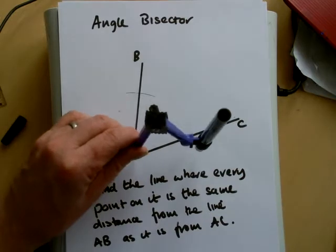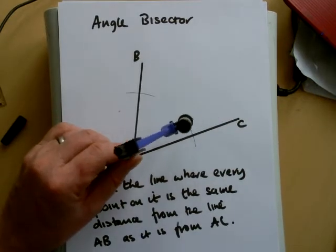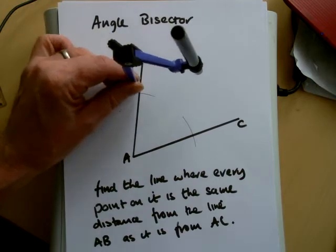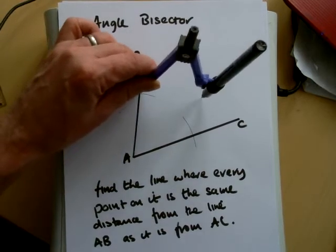And then mark a line that's the same distance on AC from the centre of A. Then move your compass up to the point where it cuts AB.